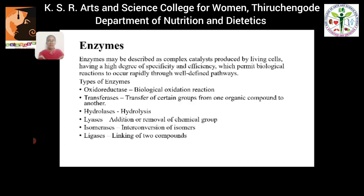First, enzymes. Enzymes are defined as complex catalysts which are produced by living cells. What is the role of enzymes? Enzymes permit biological reactions. Various biological reactions are performed in our body, and enzymes help those reactions occur more rapidly because they have a high degree of efficiency and specificity.